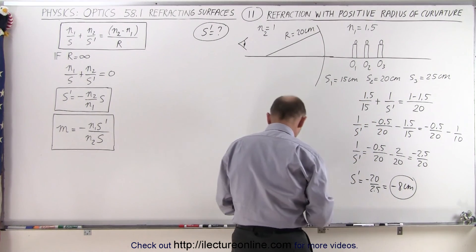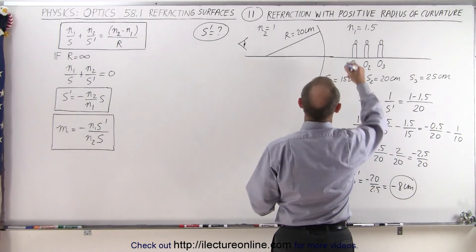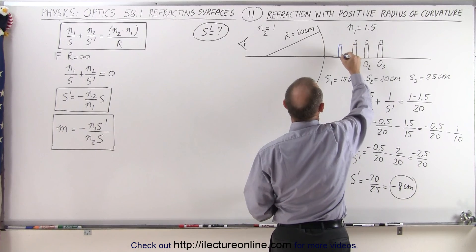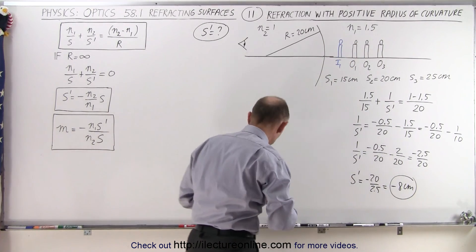So that places the image at a distance of 8 centimeters away from the boundary. So here's our first image, image 1, based upon the position of object 1.